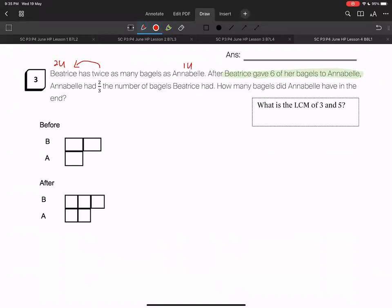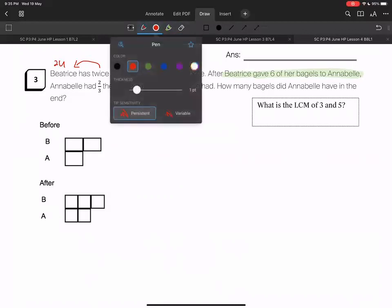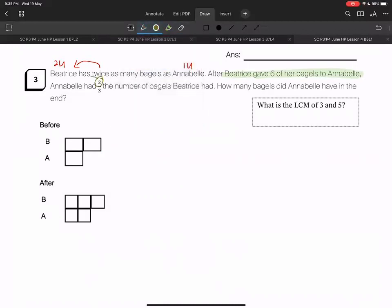Beatrice has twice as many bagels as Annabelle. After Beatrice gave some of her bagels to Annabelle, as you can see here at the after stage, Annabelle would have two parts, Beatrice would have three parts, as seen here in the after stage. But because we are able to recognize that it's constant total.